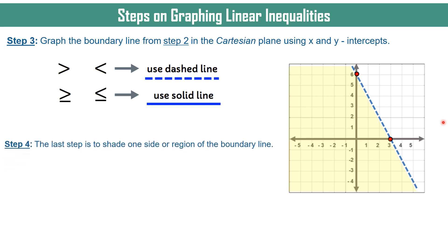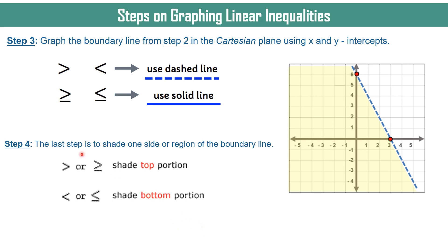To know which part will be shaded: if the inequality symbol is greater than or greater than or equal to, shade the top portion. If the symbol is less than or less than or equal to, shade the bottom portion. Please take note that you can only apply this if you have isolated Y from the very start. If not, then you may test the origin to know which part must be shaded.